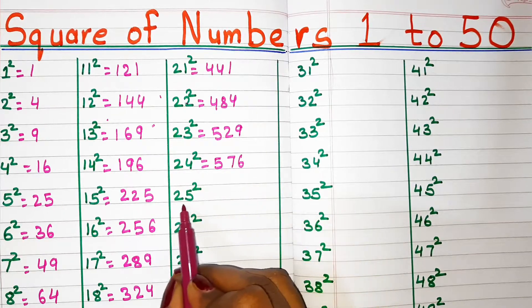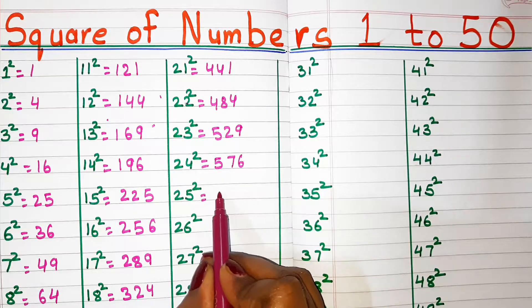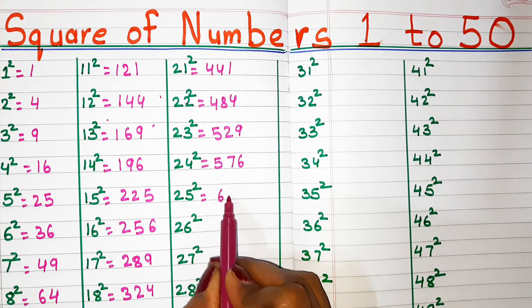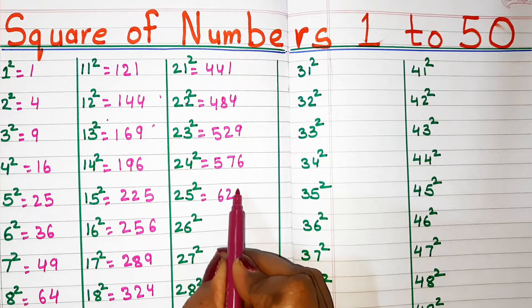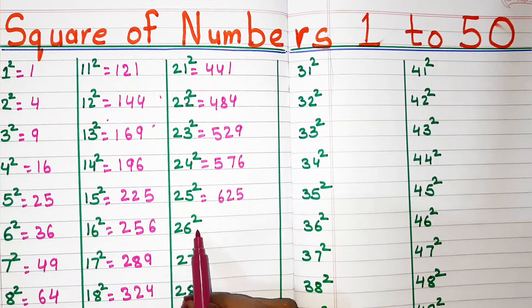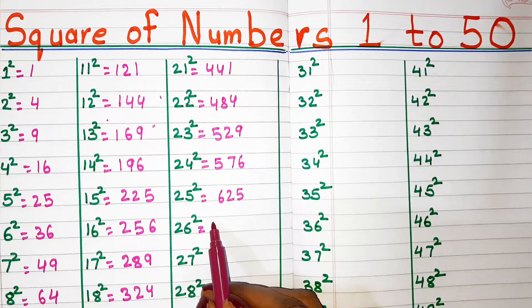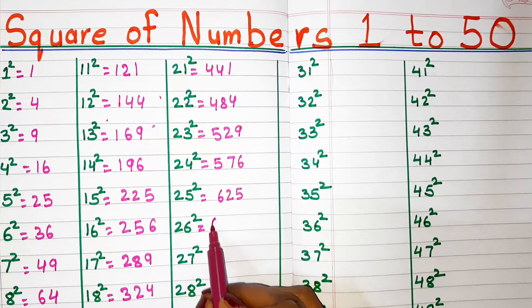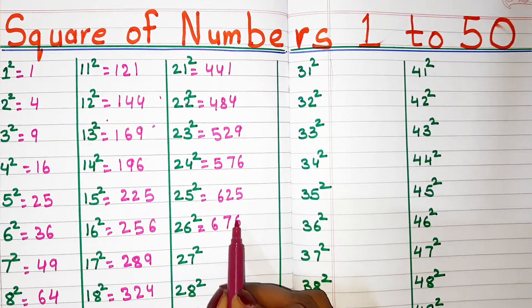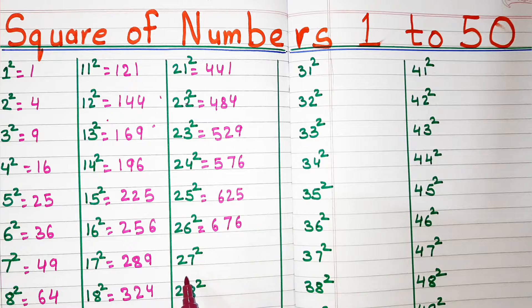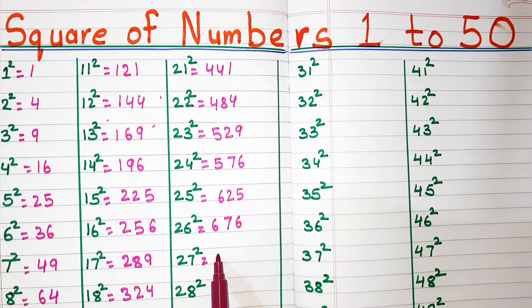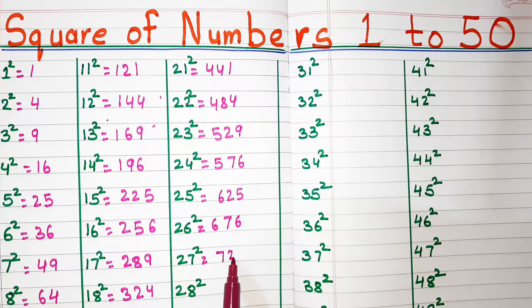Square of 25, 625. Square of 26, 676. Square of 27, 729.